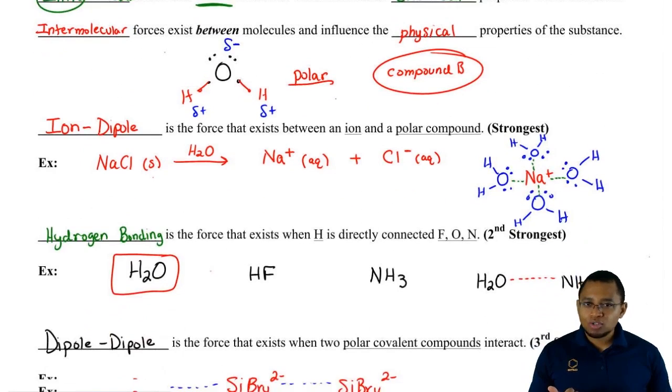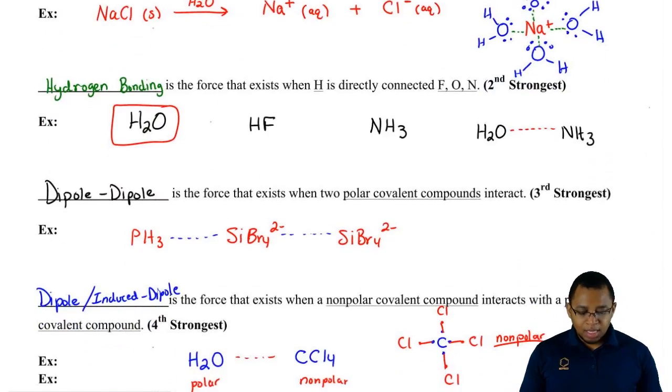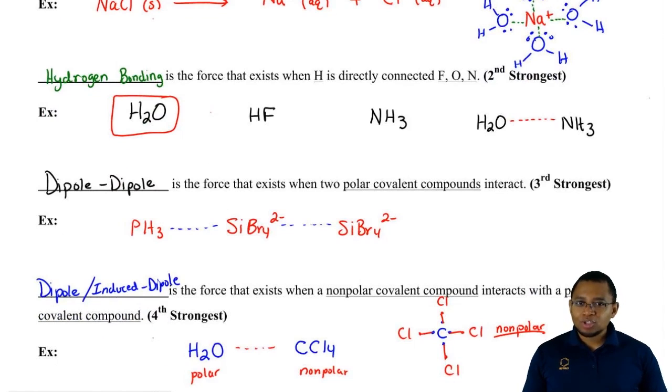Ion dipole, you don't really need to know how to draw. Ion dipole exists anytime we have an ionic compound. So if we have an ionic compound dissolving in a polar solvent like water, it's going to be ion dipole. H bonding, we don't really need to know how to draw either, because if H is connected to F, O, or N, it's automatically H bonding.